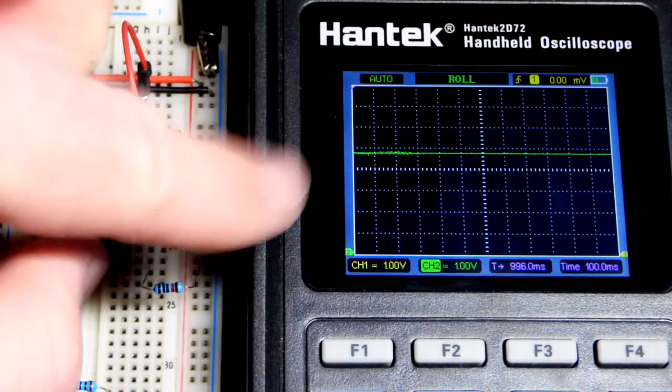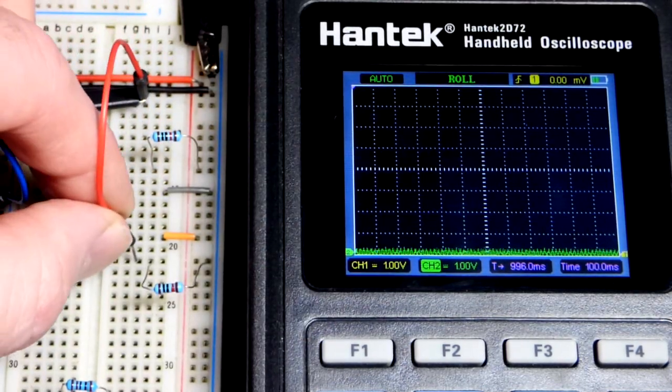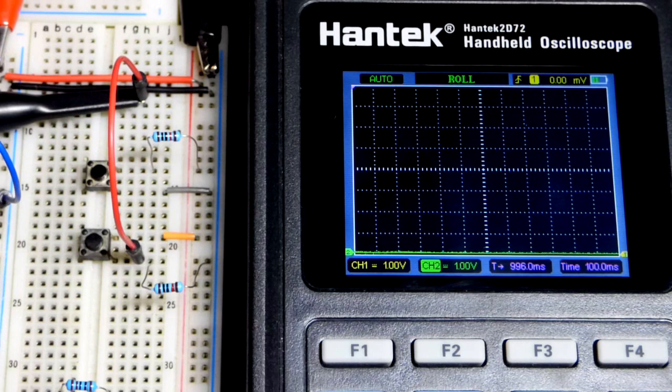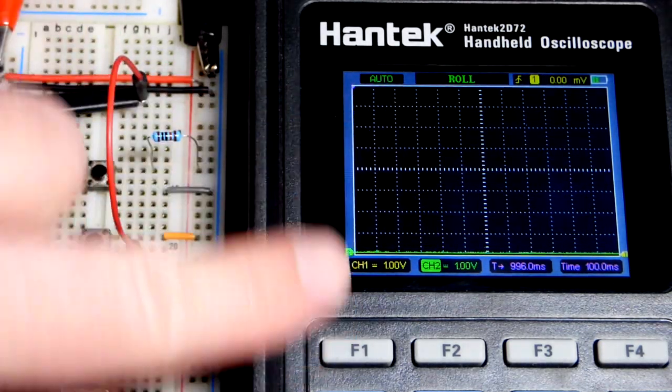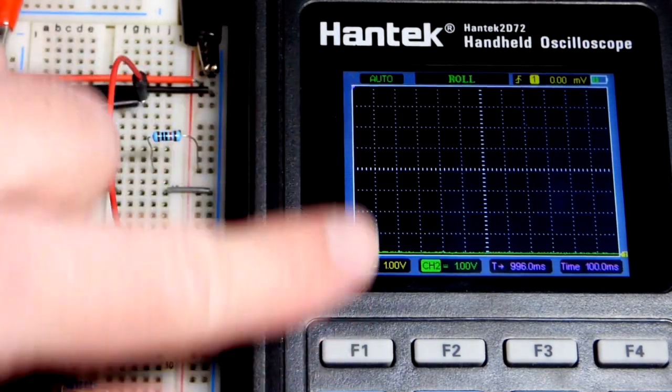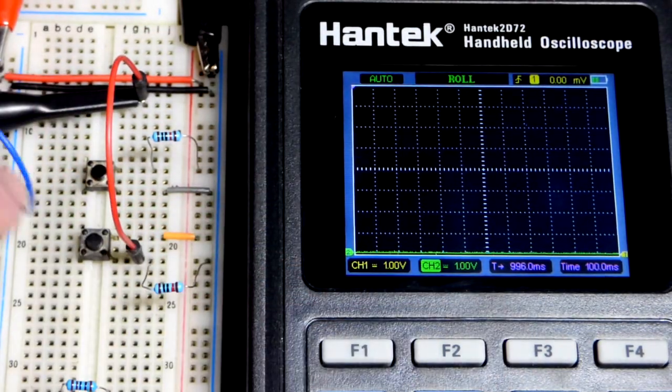We have two different voltages depending on whether I press the button or not. That's the basis for digital electronics. You have signals that are one of two states, either high or low.